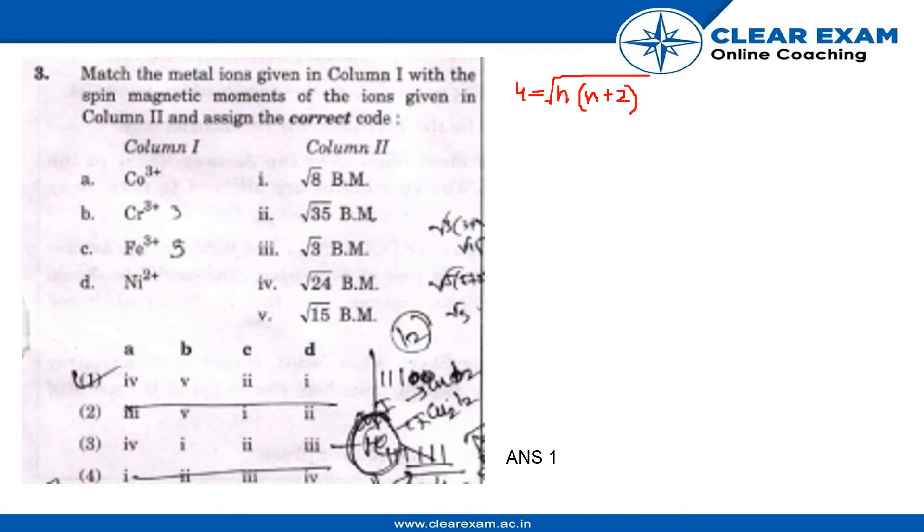n is the number of unpaired electrons. In Co³⁺, unpaired electrons are 4. In Cr³⁺, it is 3. In Fe³⁺, it is 5, and in Ni²⁺, it is 2. First, let's calculate the magnetic moment of Co³⁺.